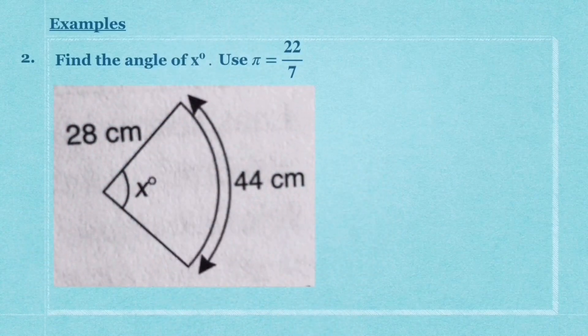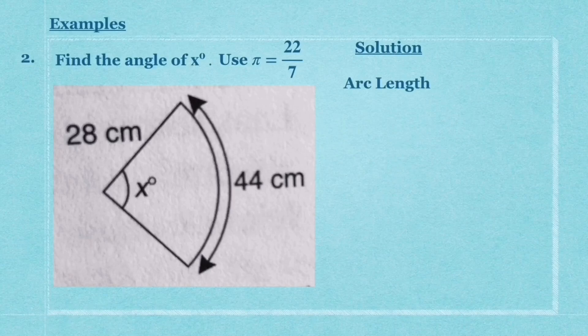Second example: you want to find the angle x using π = 22/7 again. Look at this diagram. You've got radius = 28 cm and arc length = 44 cm.